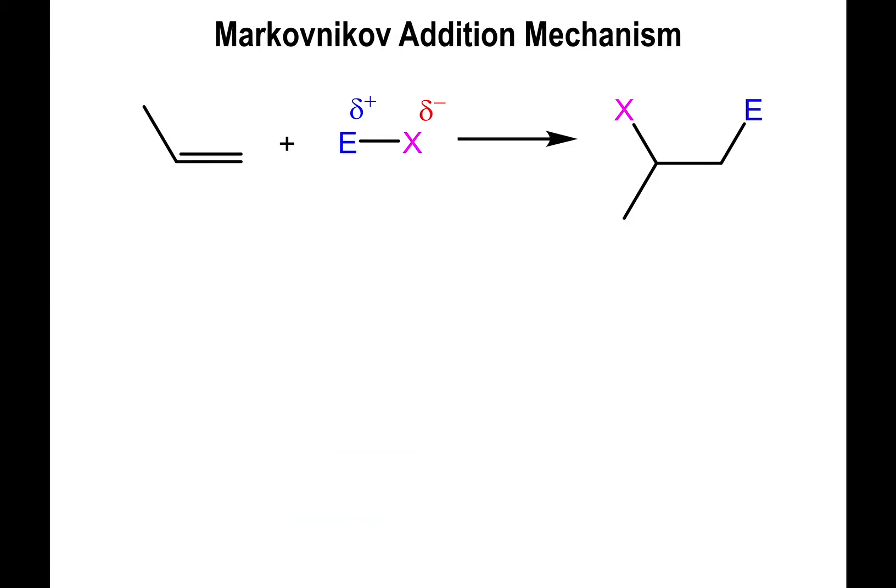All right, so that was the observation. Now, many years later, probably decades later, the reason that this observation was taking place was because in order to carry out the mechanism to get to the product side, you have to go through two steps. The first step involves the alkene attacking that electrophilic element. In the process, the bond right here is broken, the electrons go to the more electronegative element.